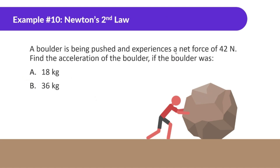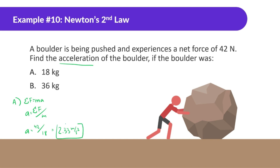A boulder is being pushed and experiencing a net force of 42 newtons. Find the acceleration if the boulder is 18 kilograms. Acceleration equals net force divided by mass: 42 divided by 18 gives 2.33 meters per second squared.